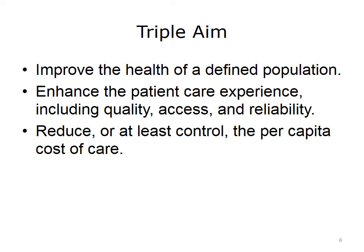Another key is defining the target population whose health you want to improve so that you can make the appropriate proactive investments to ensure they get the most appropriate care, including prevention. Enhancing the patient experience means not only improving the quality and coordination of the care patients receive, but also providing more convenient and broader access, making sure care is reliably delivered when needed. Finally, the triple aim calls for reduction, or at least flattening of the rate of increase, of healthcare costs per person in the U.S., primarily by eliminating the waste identified at the beginning of this lecture.